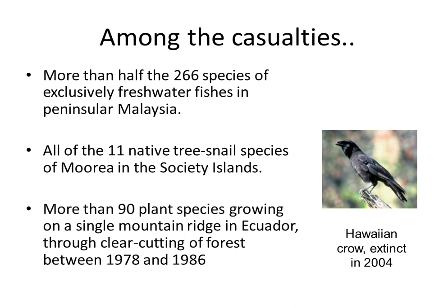Among the casualties: more than half of the 266 species of exclusively freshwater fishes in Malaysia; all of the 11 native tree snail species of Moorea in the Society Islands; more than 90 plant species growing on a single mountain ridge in Ecuador because of clear-cutting of the forest between 1978 and 1986. And here is the Hawaiian crow, which went extinct in 2004.